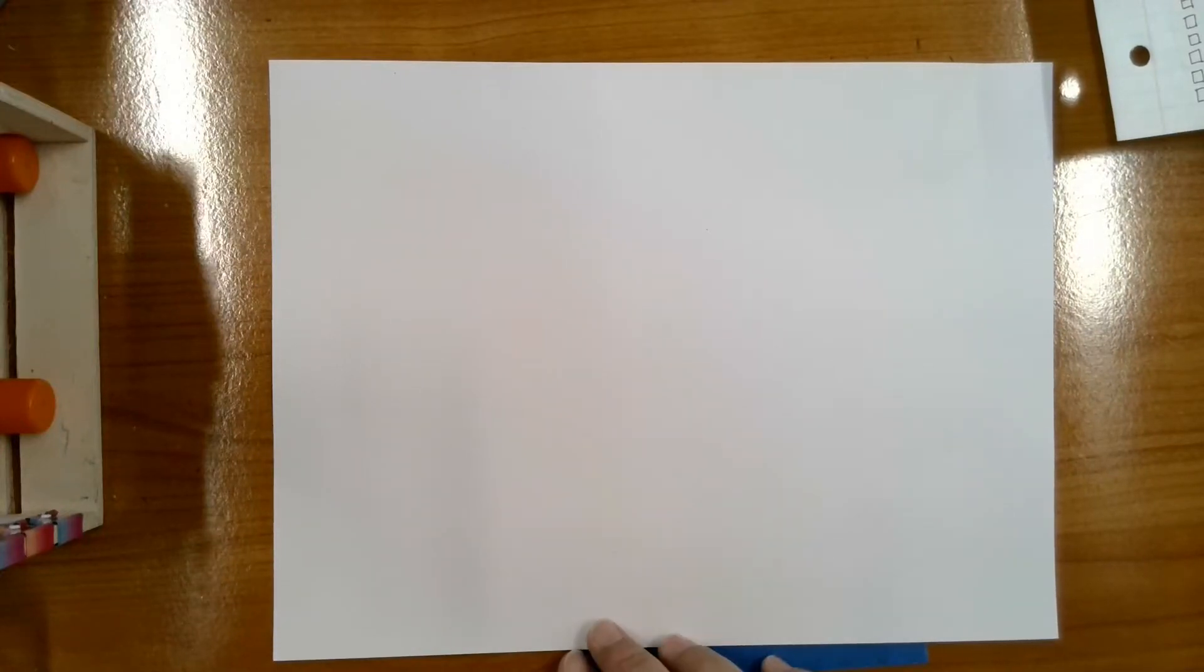Hi Kindergarten. Today we're going to be starting a new project. We are going to be making a sun using different kinds of lines to make the rays that come off of the sun.